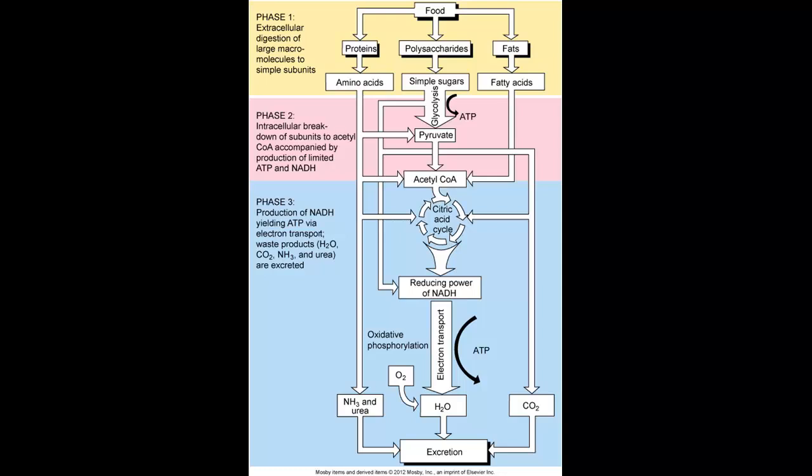Starting at the top: a person ingests food — proteins, polysaccharides, and fats — which are broken down into amino acids, simple sugars, and fatty acids. In carbohydrate metabolism, glycolysis breaks down glucose and produces some ATP, resulting in pyruvate and acetyl-CoA. Without oxygen present, we stop there. The pyruvate process starts producing lactic acid, which becomes a problem. We don't get down to the citric acid cycle section without oxygen present.